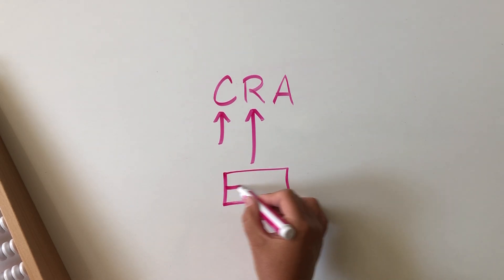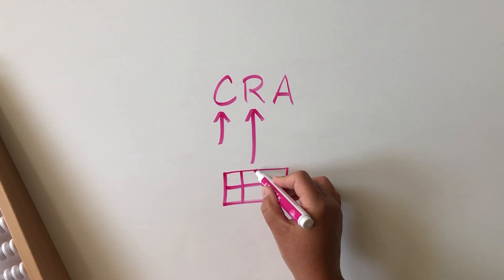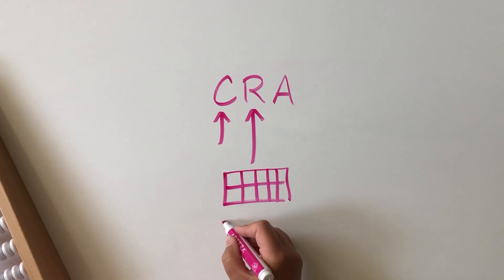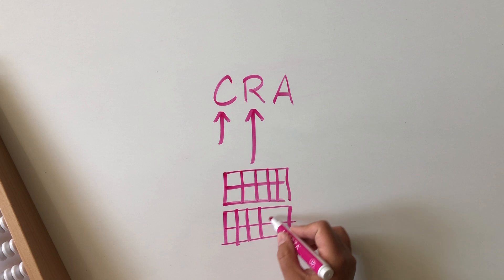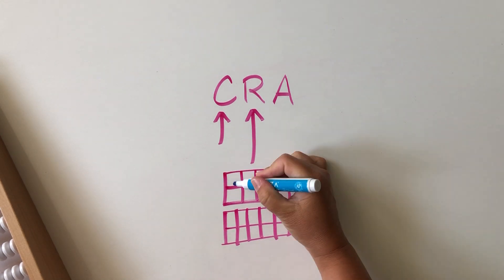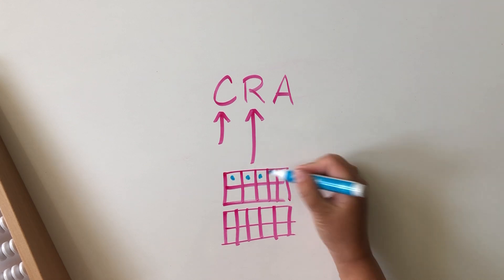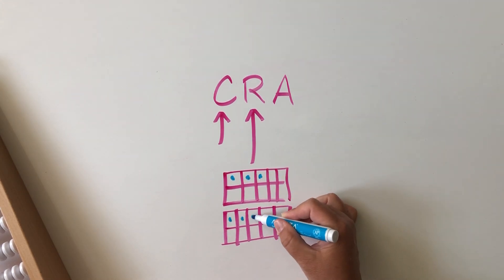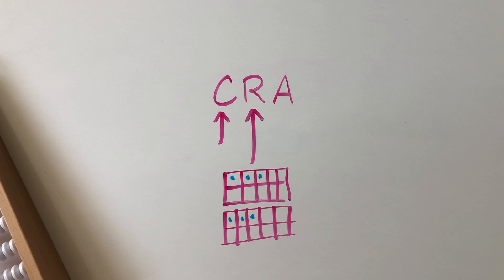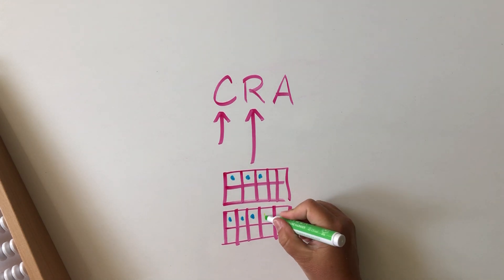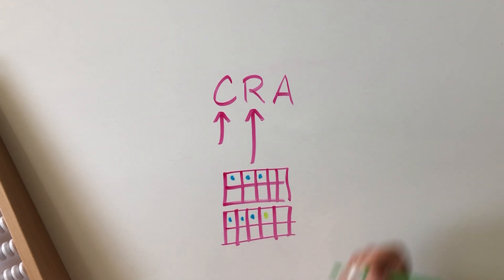For example, we might draw 10 frames, and then we could represent—so here's a doubles fact, 3 plus 3—and we add one more. Now it shows 3 plus 4, which is a near doubles fact. Representational phase is when we are representing things in different ways, in drawings.